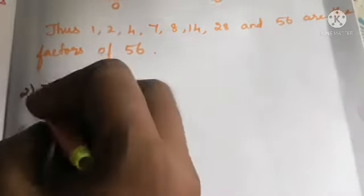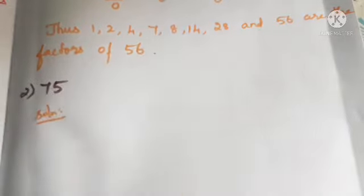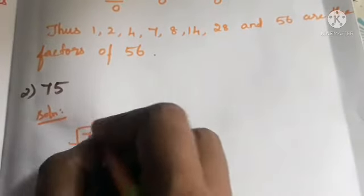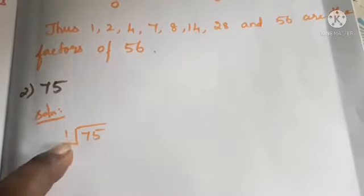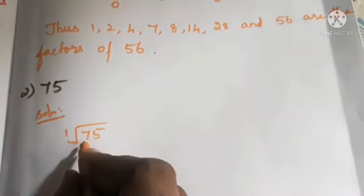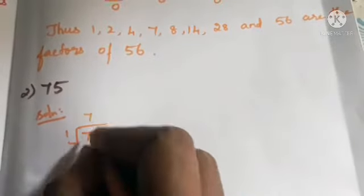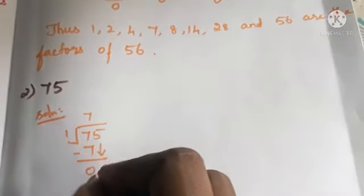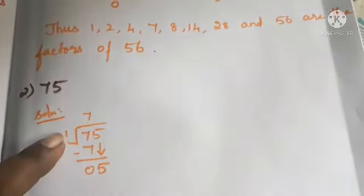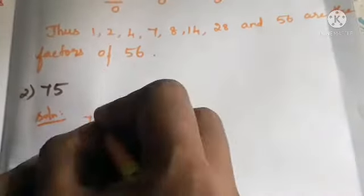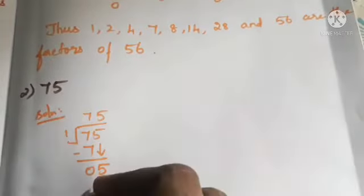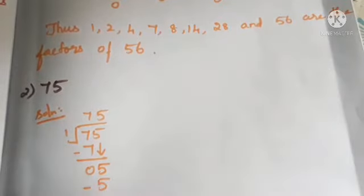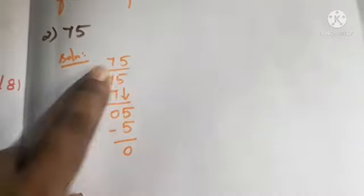To find the factors of 75 using division, start by dividing 75 by 1. In the tens place, 7 ones are 7; 7 minus 7 is 0. Bring down 5; five 1s are 5; 5 minus 5 is 0. Remainder is 0, so 1 and 75 are factors of 75.